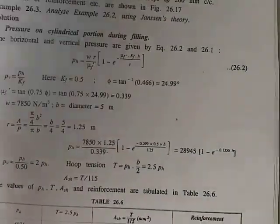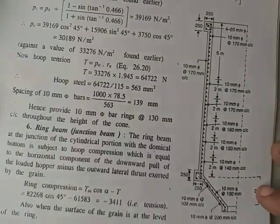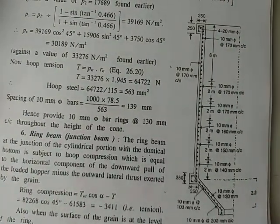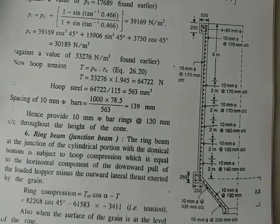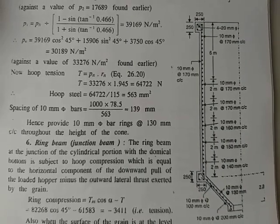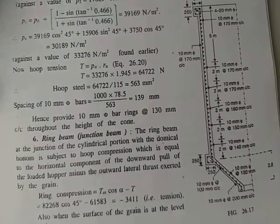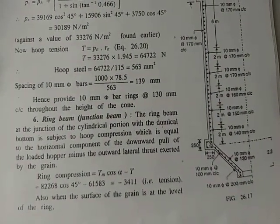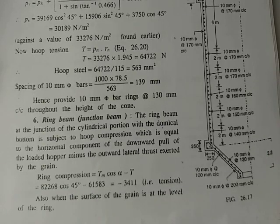This completes the design of the silo using Aries' theory. The same procedure can be applied using Jensen's theory by computing ph with Jensen's formula and then designing the vertical walls and hopper bottom accordingly. In the next lecture, we will take up the design of bunkers.